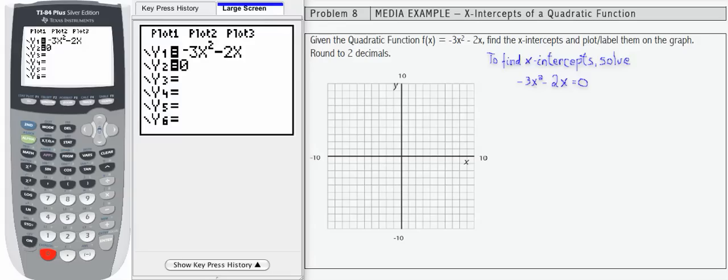So what we're doing to find the x-intercepts is we're solving negative 3x squared minus 2x, that's our original function. We're setting that equal to 0, and we're going to solve for x. Right now, we're going to use a graphical process. In our next lesson, we're going to be using other processes, algebraic, to solve this.